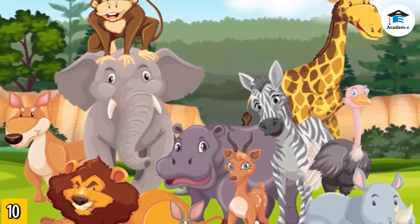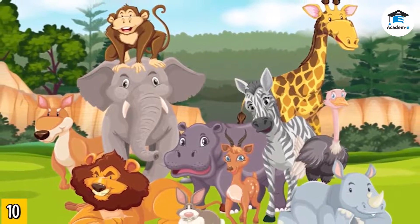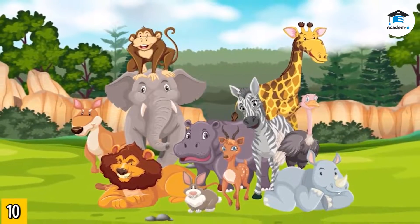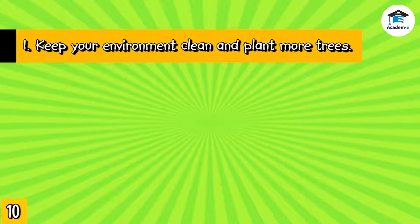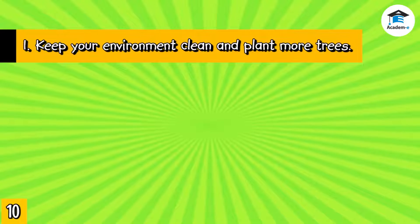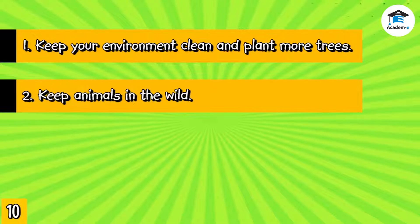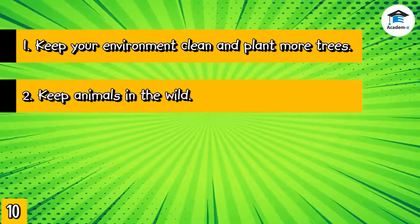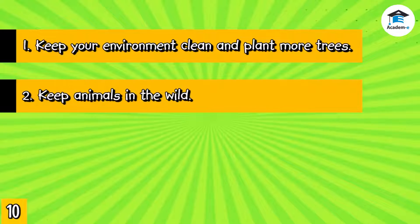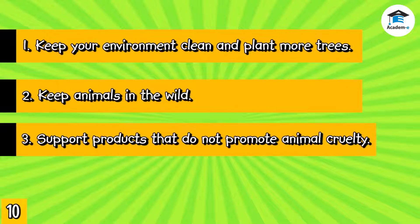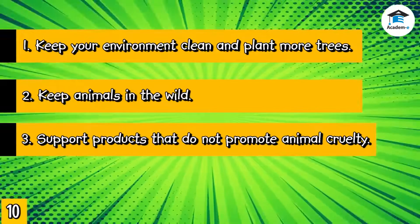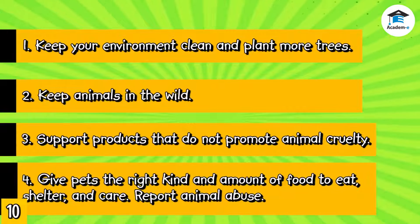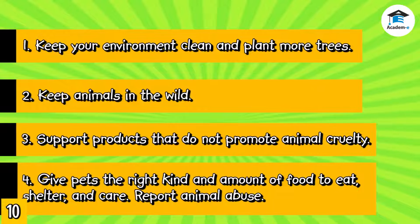Animals are essential to people. As good stewards of all creations, it is our responsibility to protect and take care of animals. Here are some ways to show how much you love and care for them: One, keep your environment clean and plant more trees — animals need clean water, air, and habitat to survive. Two, wild and endangered animals should be kept in their habitats; only domesticated animals should be taken as pets. Three, support products that do not promote animal cruelty. Four, give pets the right kind and amount of food, shelter, and care. If you witness animal abuse, report it immediately to authorities.